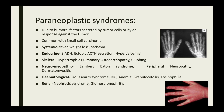Paraneoplastic syndromes are commonly seen with small cell carcinoma. They commonly present as fever, weight loss, and cachexia. Endocrine manifestations can be SIADH, ectopic ACTH secretion, and hypercalcemia, mainly due to ectopic parathyroid hormone-related peptide secretion. There can be skeletal manifestations like hypertrophic pulmonary osteoarthropathy. On X-ray, there will be periostitis of the distal radius, and the patient will also have local tenderness in that area and pitting edema. Neuro-myopathic manifestations include Lambert-Eaton syndrome, where there will be antibodies against voltage-gated calcium channels in the presynaptic area.